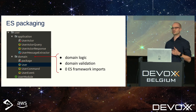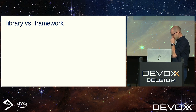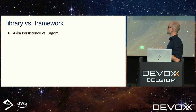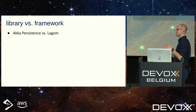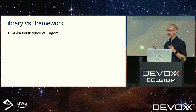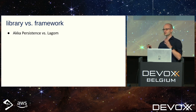If at some point I decide this event sourcing solution is not good for me, I simply remove that package and my domain will be untouched. Library versus framework — removing a library from your code base is much easier than removing a framework. A good example is Akka Persistence versus Lagom. Lagom is — or actually was, because it's no longer supported — a full-blown event sourcing framework: you put commands here, events there, and Lagom does the magic, which is nice unless you have a very specific business use case.